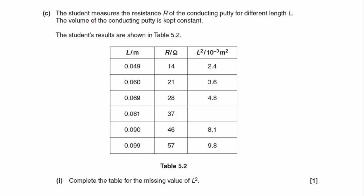The student measures the resistance R of the conducting putty for different length L. The volume of the conducting putty is kept constant. The student's results are shown in table 5.2. And what we've got to do is complete the table for the missing L-squared value. So our L-value is 0.081.